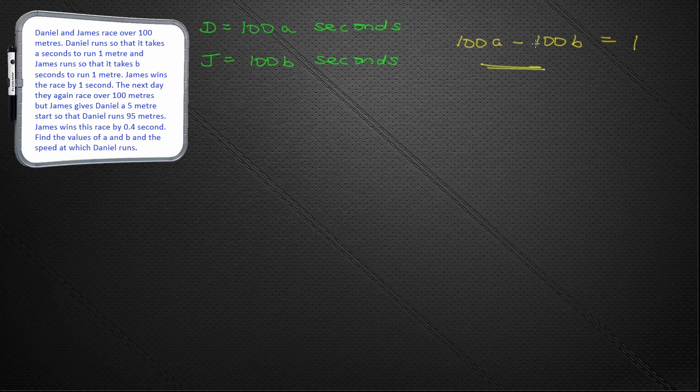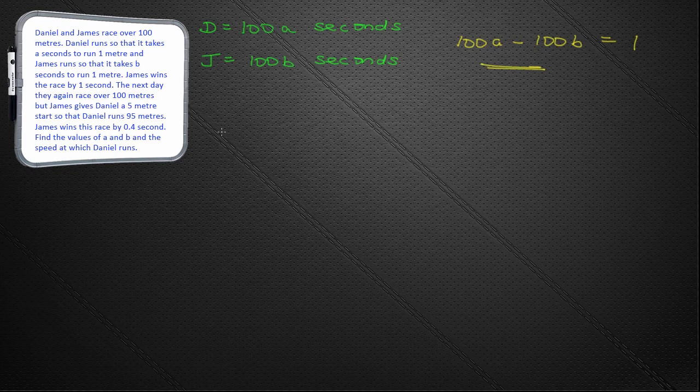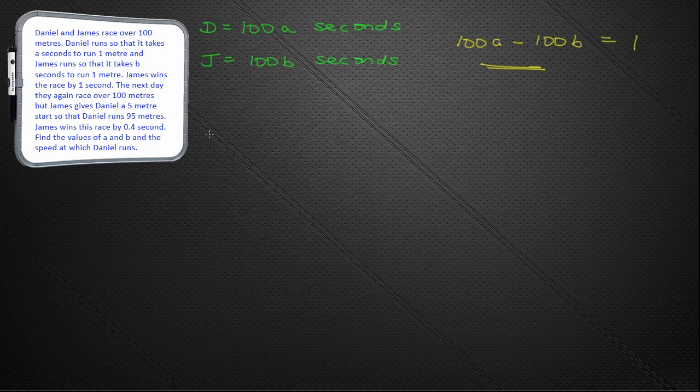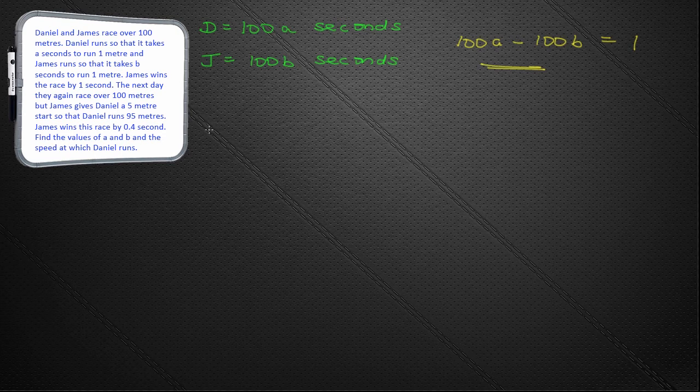So, Daniel took slower because James won by one second. So, we have an equation. How many unknowns do I have in this equation? Well, I've got two. And, if we've got two unknowns, I need to have two equations. Well, we continue reading the question. The next day, they race again over 100 metres. But, James gives Daniel a 5 metre start. James wins by 0.4 seconds. Wow! Find the values of A and B at the speeds of which they run.